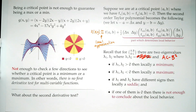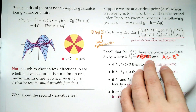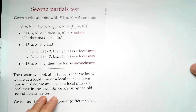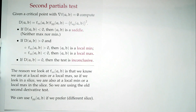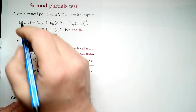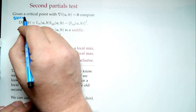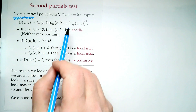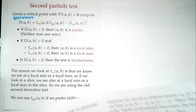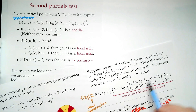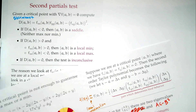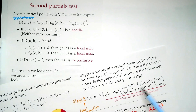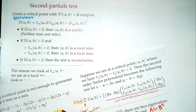Here is the second partials test. Given a critical point where the gradient is zero, we compute a quantity called D — the discriminant: D(a,b) = f_xx(a,b)·f_yy(a,b) - [f_xy(a,b)]². We're multiplying the diagonal entries and subtracting the product of off-diagonal entries — the determinant of the 2×2 matrix. It's f_xy² because f_xy and f_yx are equal.